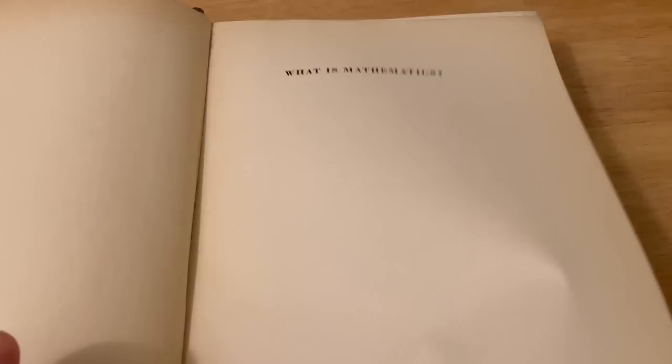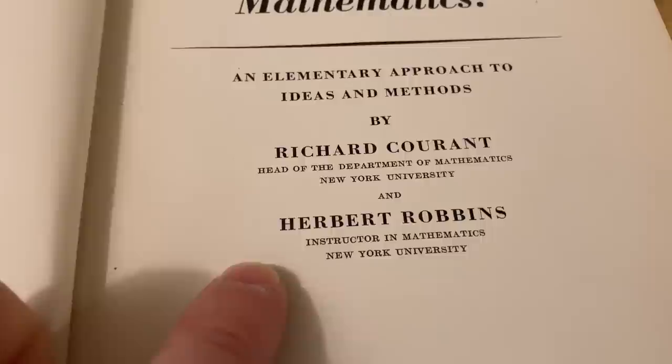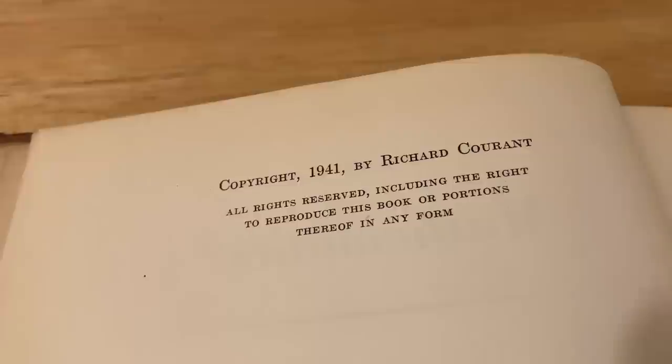Let's open up the flap here. What is mathematics? By Richard Courant, Head of the Department of Mathematics, New York University, and Herbert Robbins, Instructor in Mathematics, New York University. Oxford University Press, copyright 1941 by Richard Courant. And yes, this is the same Courant from the Courant Institute. So it's the same person after which the Institute is named.